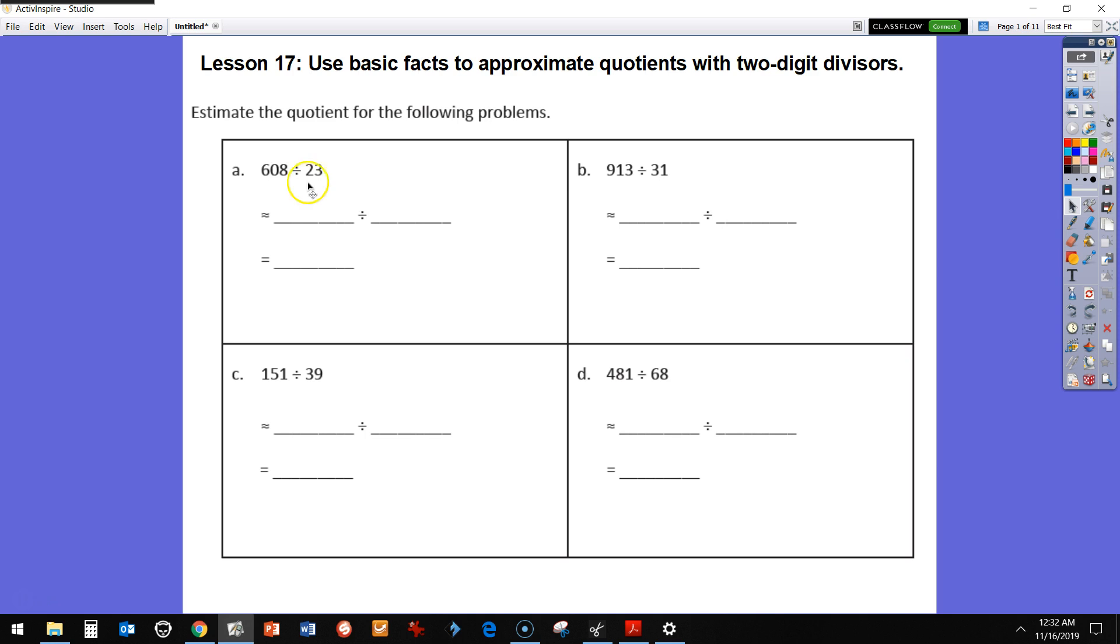Let's take a look at this first divisor here. So we have 23. We're going to round to 20 and we want to do front-end estimation and say, if we have two tens in our 20 for our divisor, we want to get something that's a multiple of two and also very easy or basic facts.